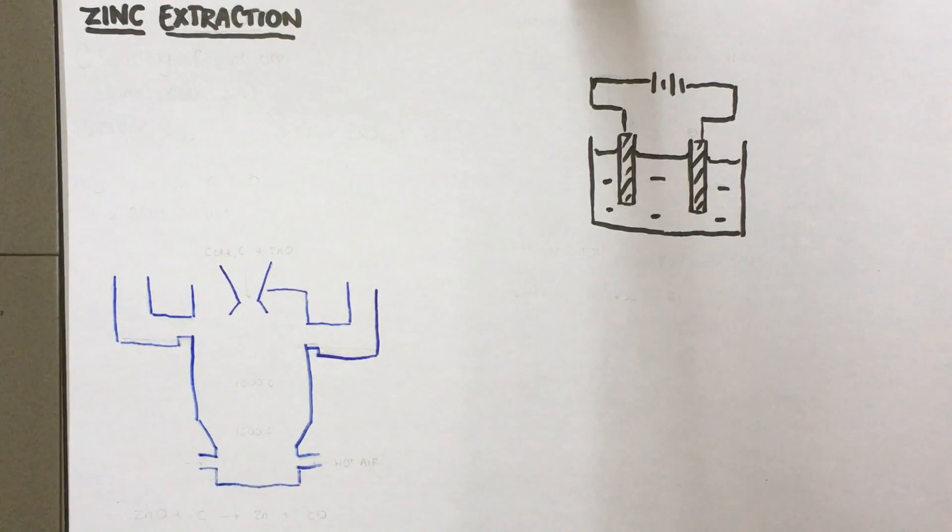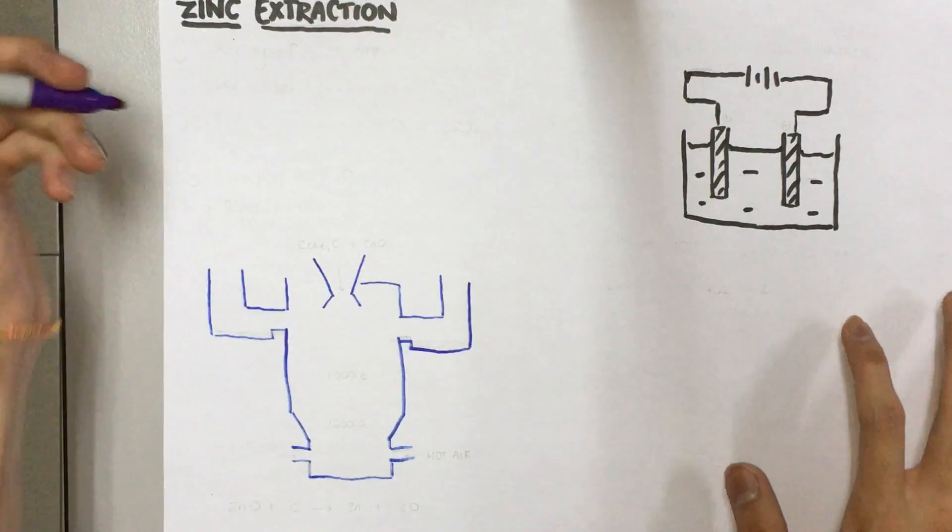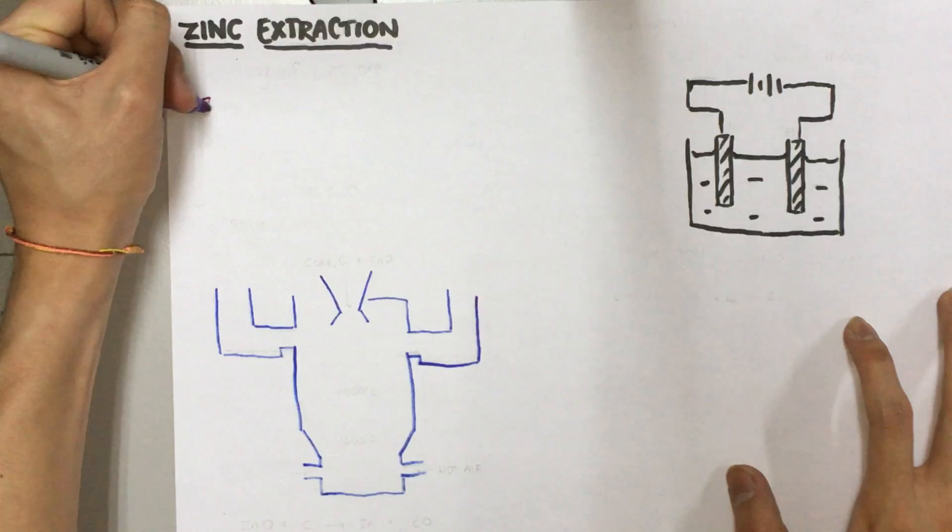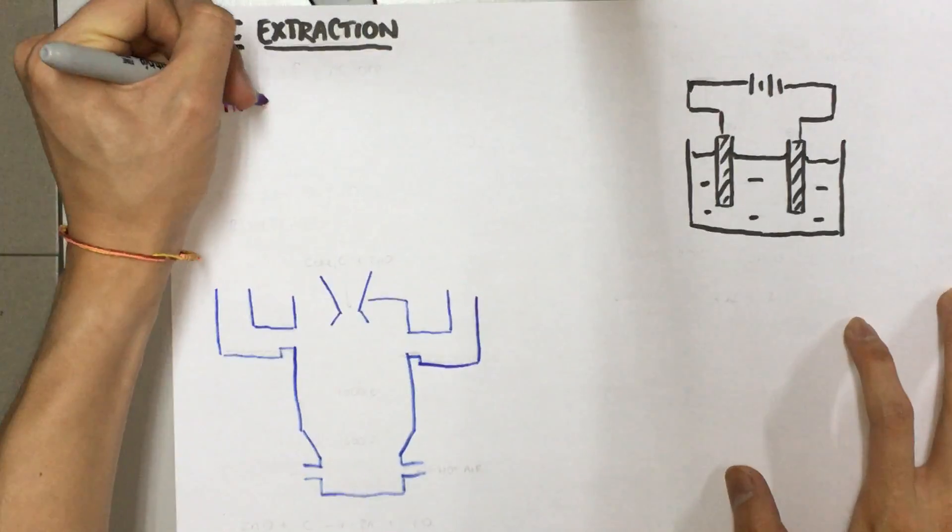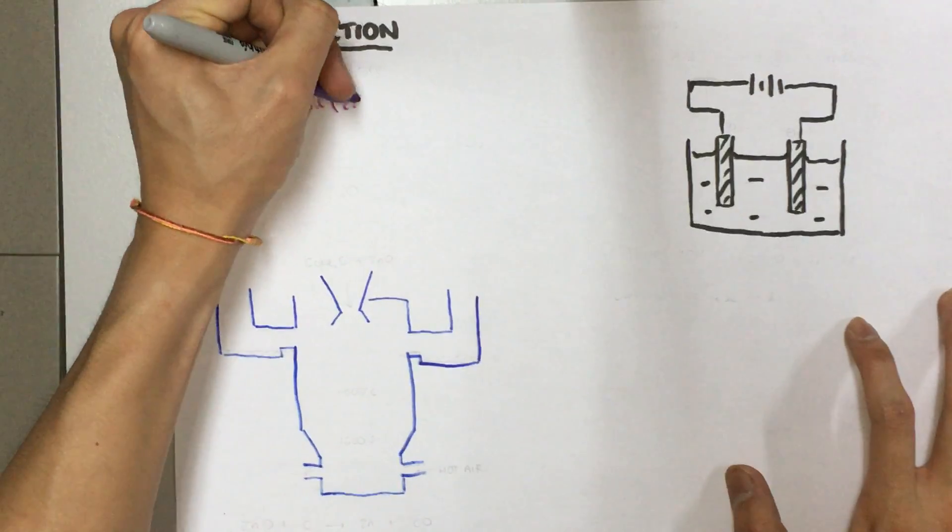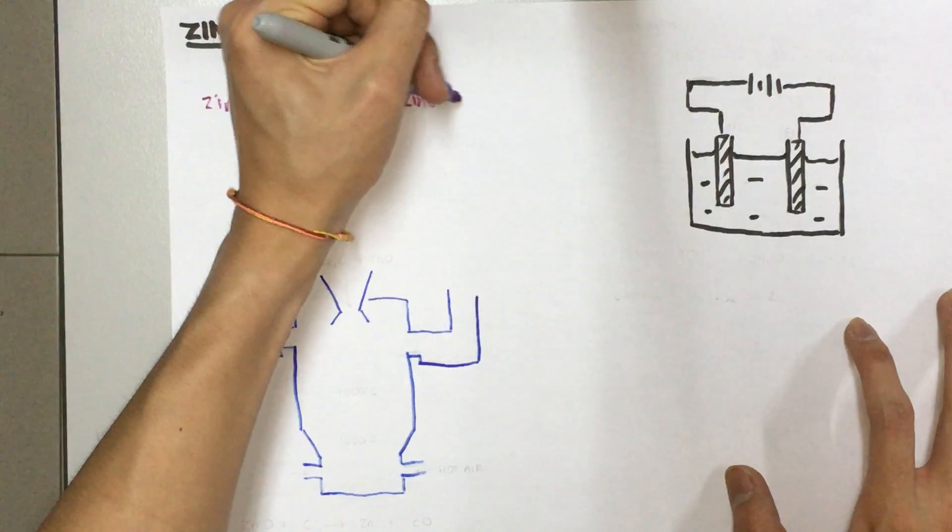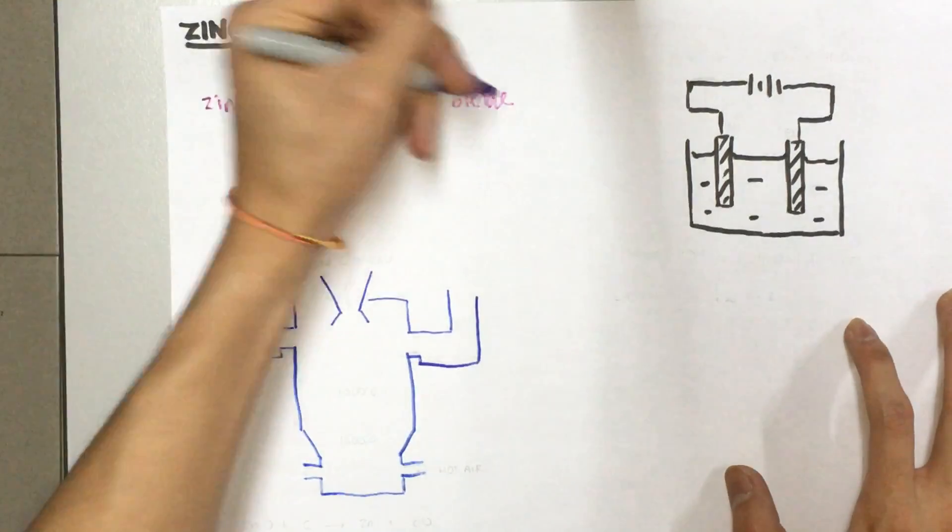Hi everyone, today we'll be talking about the process of zinc extraction from its ore. The first step is actually knowing what the ore is. The ore is zinc sulfide, which is ZnS, or it's known as zinc blend.